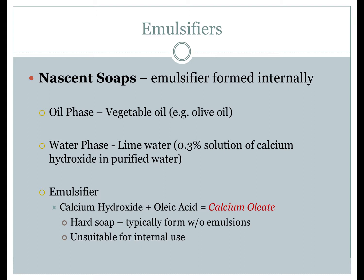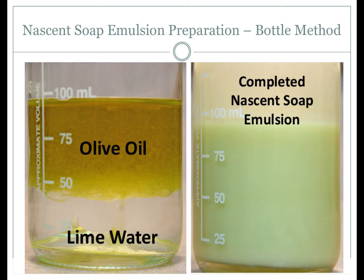Nascent soap emulsions are strictly used for topical products applied externally — lime water would never be used for an oral emulsion. With the bottle method, begin by placing equal amounts of the oil and lime water in the bottle — in this example, approximately 50 mL of lime water (0.3% calcium hydroxide solution) and 50 mL of olive oil. The bottle is then shaken vigorously for at least one minute to form the emulsion. The resulting emulsion can then be used as a wetting agent for any additional solid or insoluble ingredients.